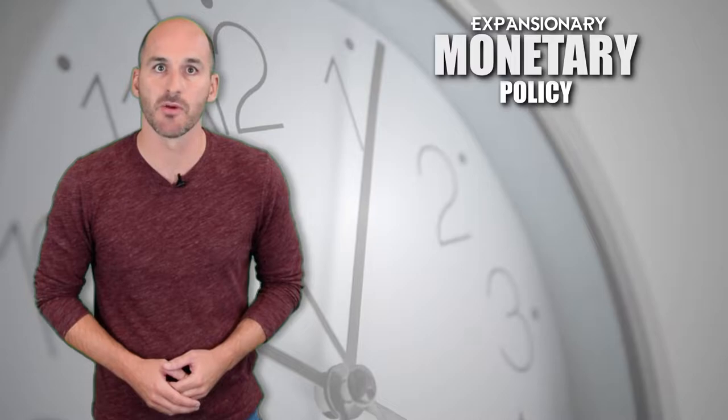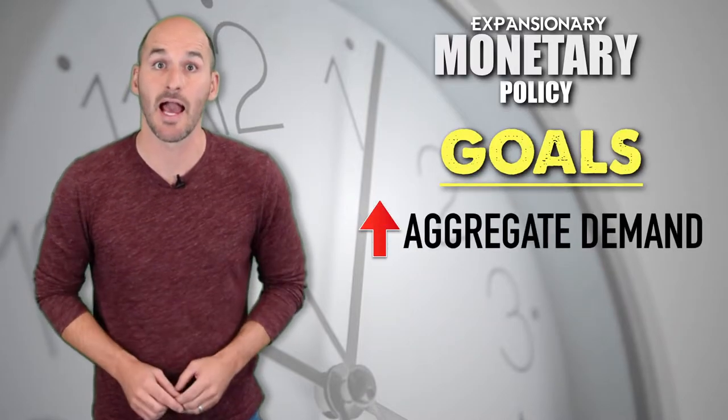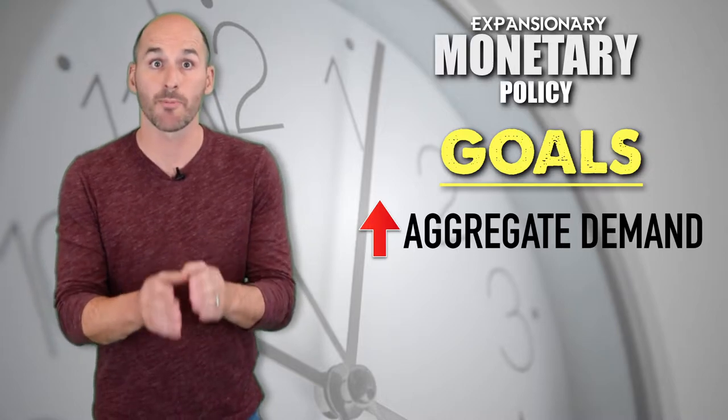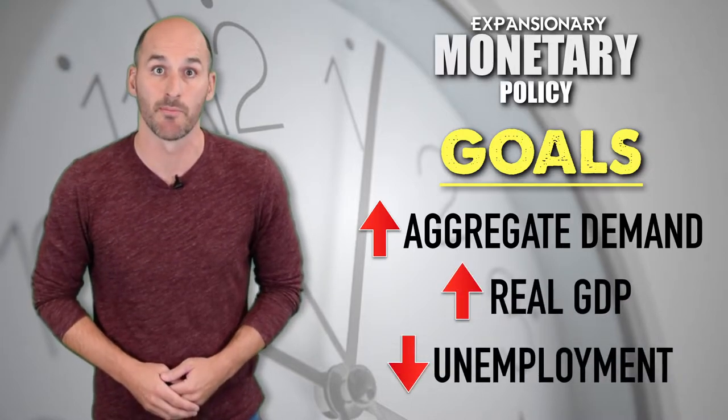When the central bank implements Expansionary Monetary Policy, it intends to stabilize the economy and stimulate aggregate demand, in order to accomplish the goals of boosting real GDP output and eliminating cyclical unemployment.